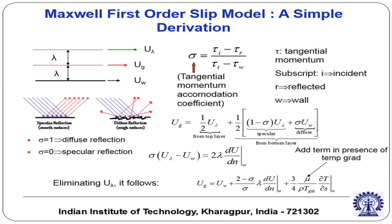Then we discussed a model introduced by Maxwell — a very classical model known as Maxwell's first-order slip model. For that, we introduced a parameter called the tangential momentum accommodation coefficient. This coefficient is defined as (τ_i − τ_r) / (τ_i − τ_wall), where τ is the tangential momentum, i is incident, and r is reflected. So τ_i is the tangential momentum of the incident molecules and τ_wall is the tangential momentum of the wall.